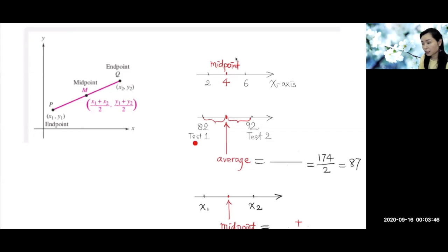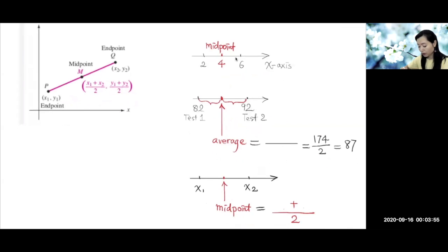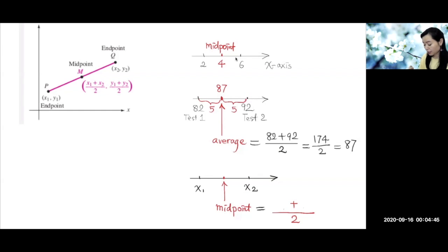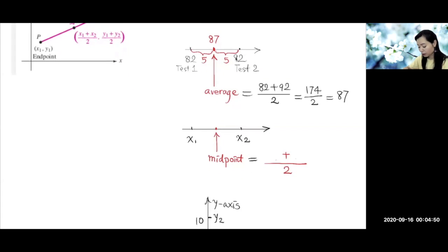Think about this: suppose this is your test score for test 1 and this is your score for test 2. If you want to find the average of the two tests, you add them up and divide by 2. So add them up and divide by 2, and you get 87. Now 87 is actually in the middle of 82 and 92 — it is 5 units away from 82, and also 5 units away from 92. 87 is in the middle. So the middle point is just the average of the two endpoints — you add them up and divide by 2.